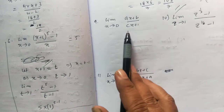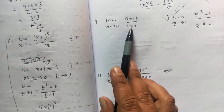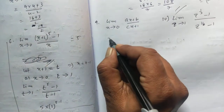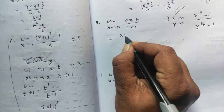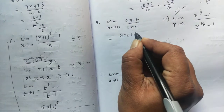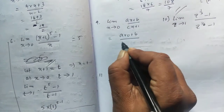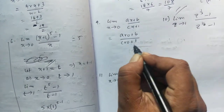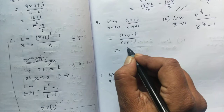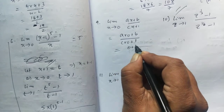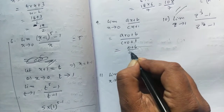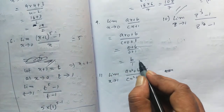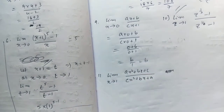Here, directly we can do it. If we put 0, nothing changes, so we can put 0 directly. A(0) + B divided by C(0) + 1 gives B/1, that is B only.